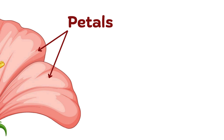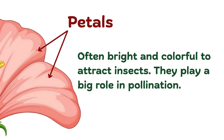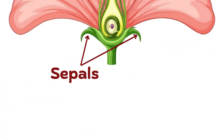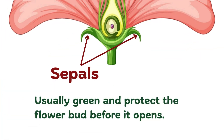First we have the petals. These are often bright and colorful to attract insects, and they play a big role in pollination. At the bottom of the flower are the sepals — they're usually green and protect the flower bud before it opens.